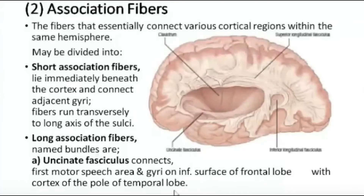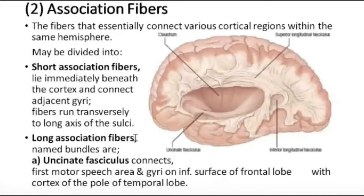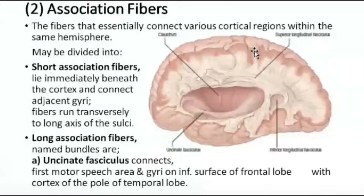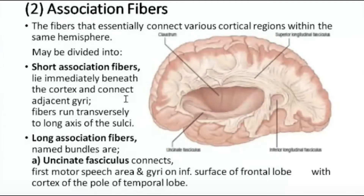The fibers that essentially connect the various cortical regions within the same hemisphere are called the association fibers. They may be divided into short association fibers and long association fibers. The short association fibers lie immediately beneath the cortex and connect the adjacent gyri. The fibers run transversely to the long axis of the sulcus, going from one gyrus to the other, remaining within the cortex of the same area.